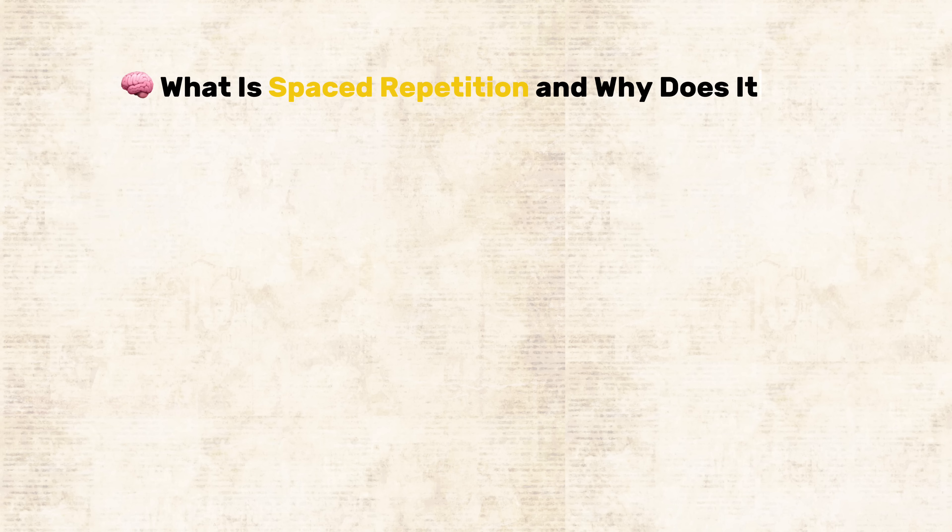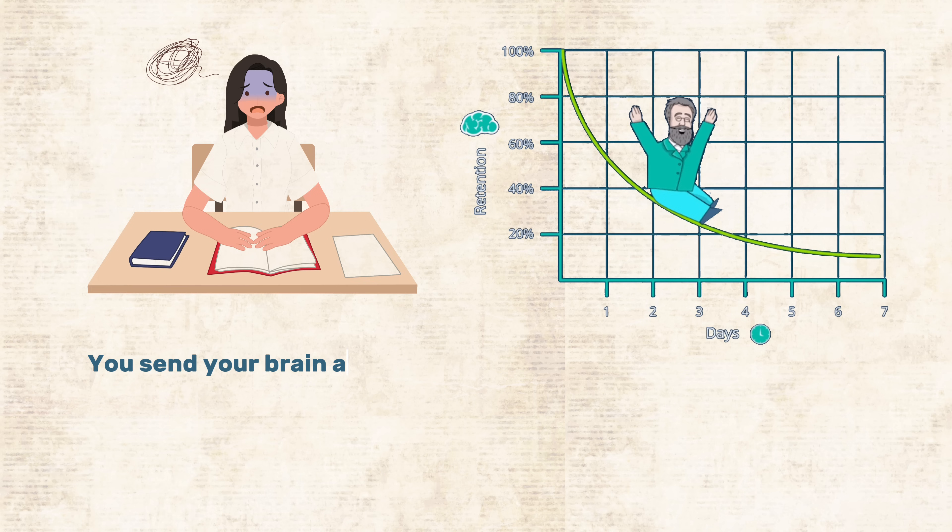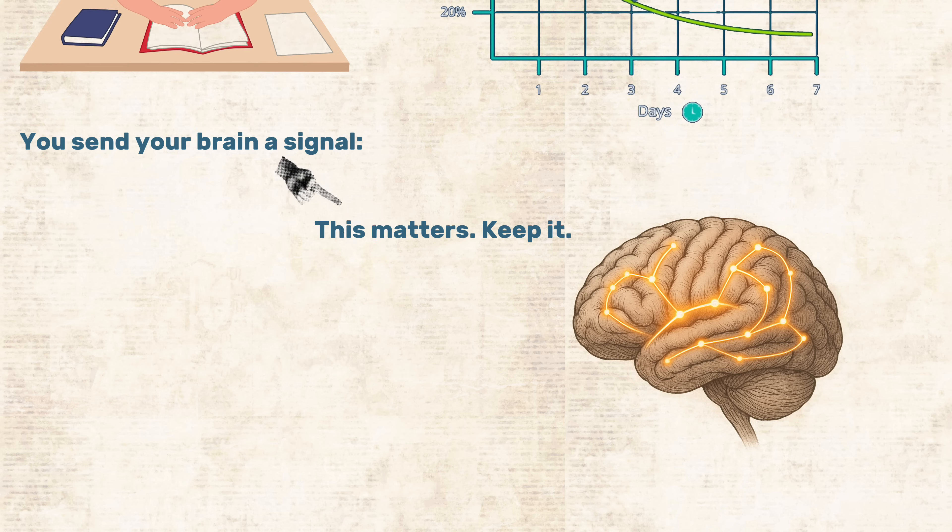What is spaced repetition, and why does it work? Memory doesn't just disappear all at once. It fades. Slowly, then rapidly. But every time you review a concept right before you're about to forget it, you reignite that memory. You send your brain a signal. This matters. Keep it. And the brain listens. It strengthens the neural pathway.